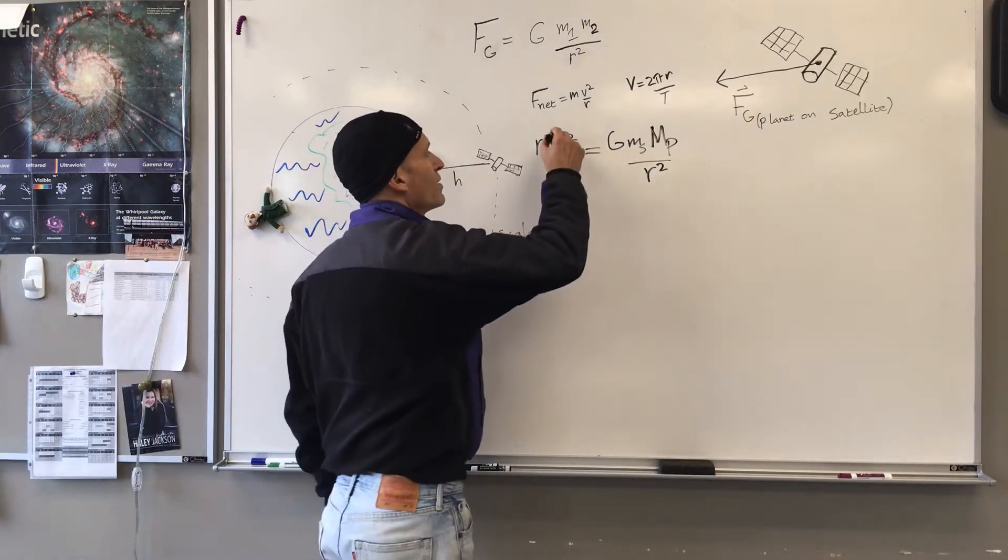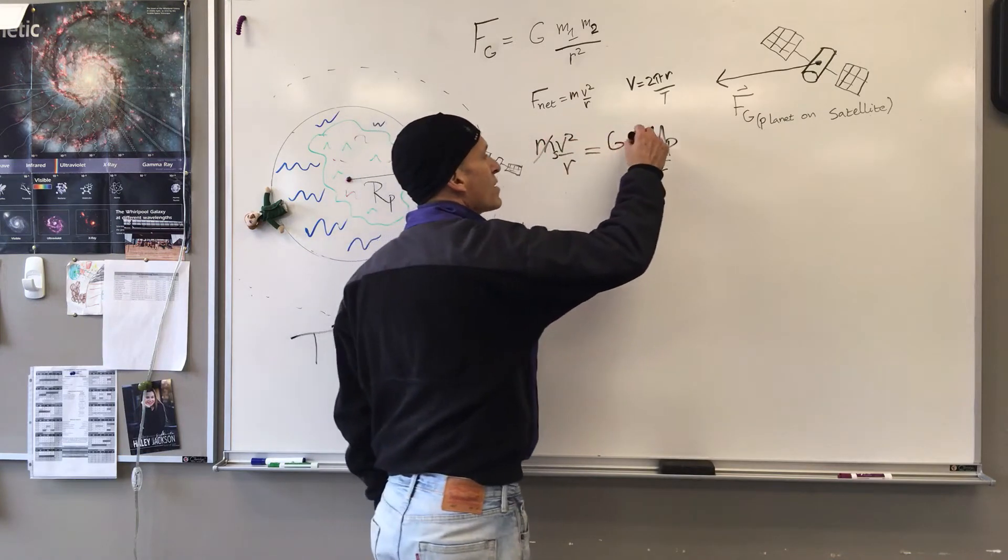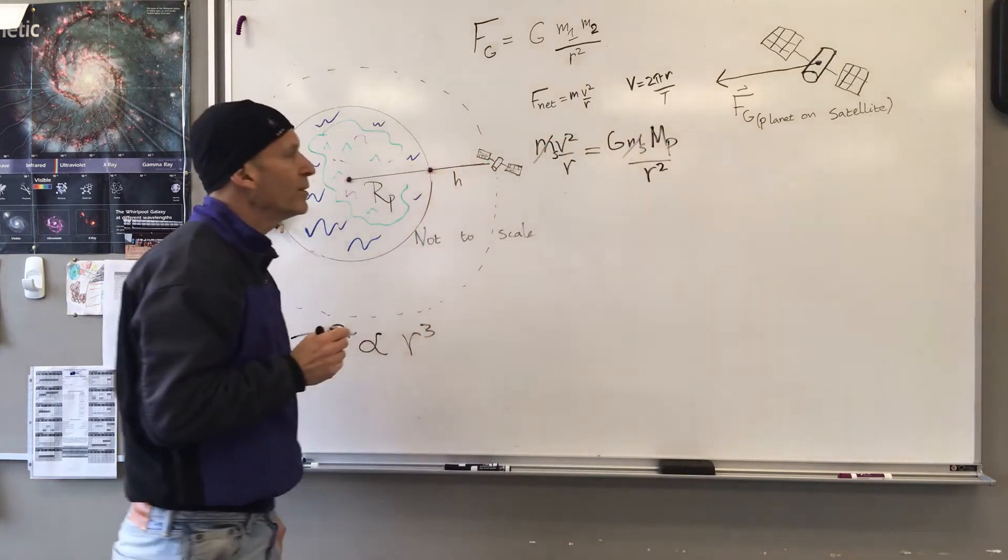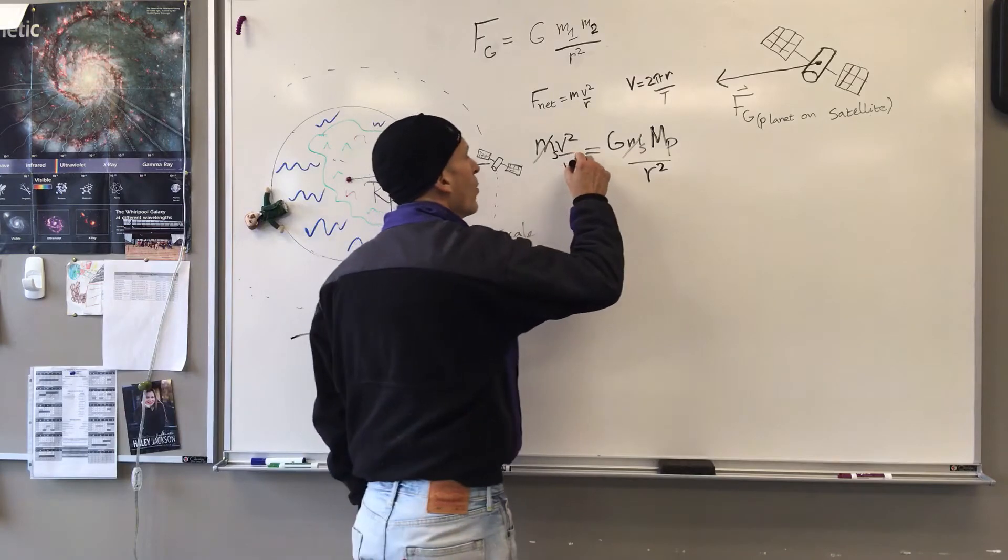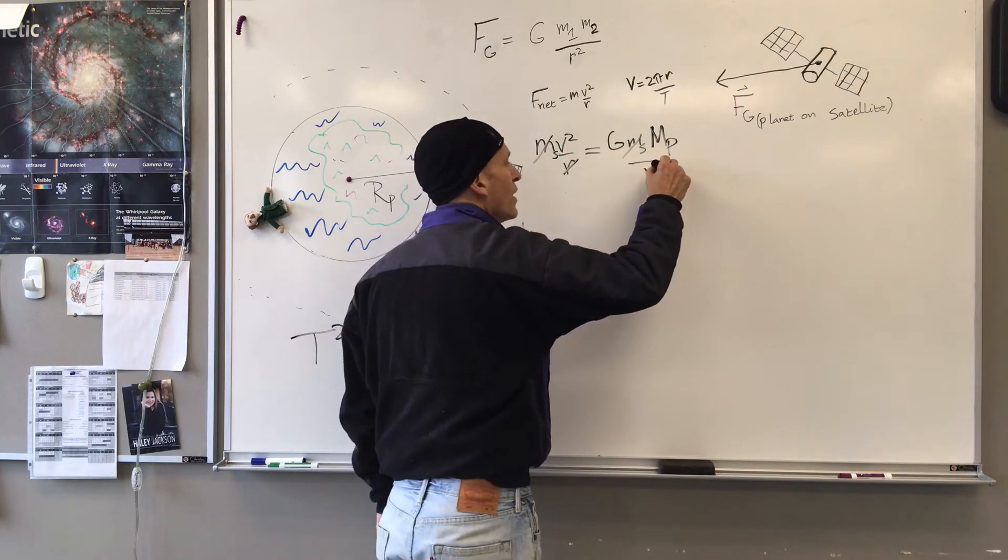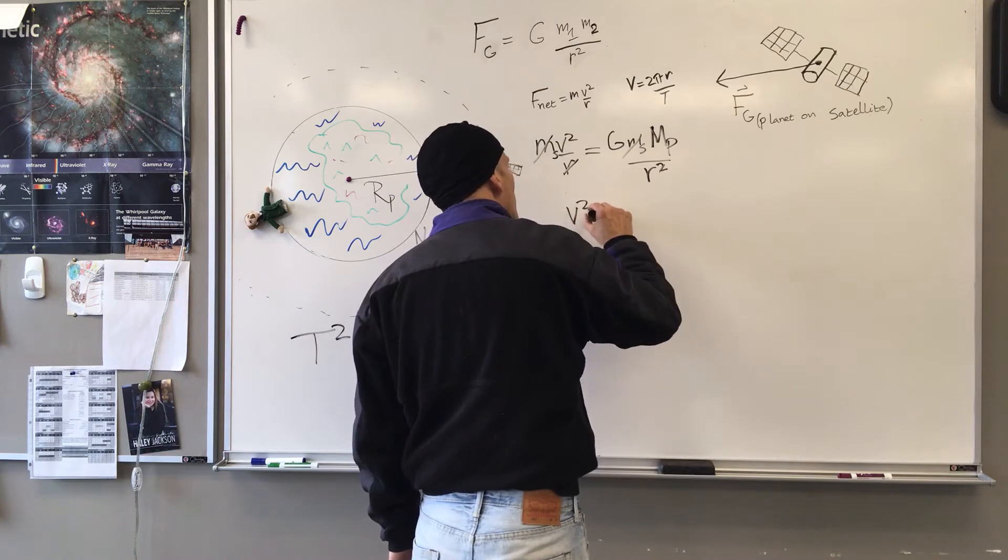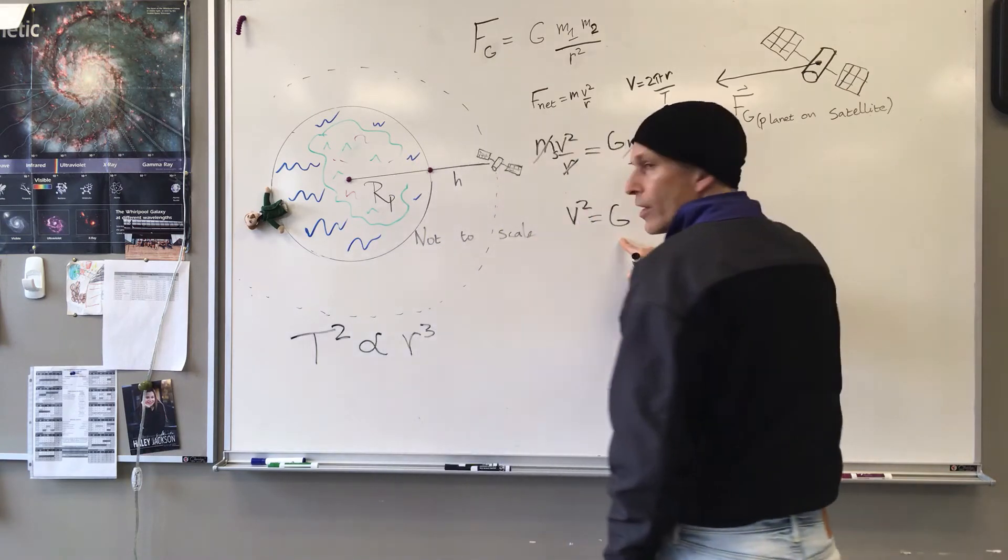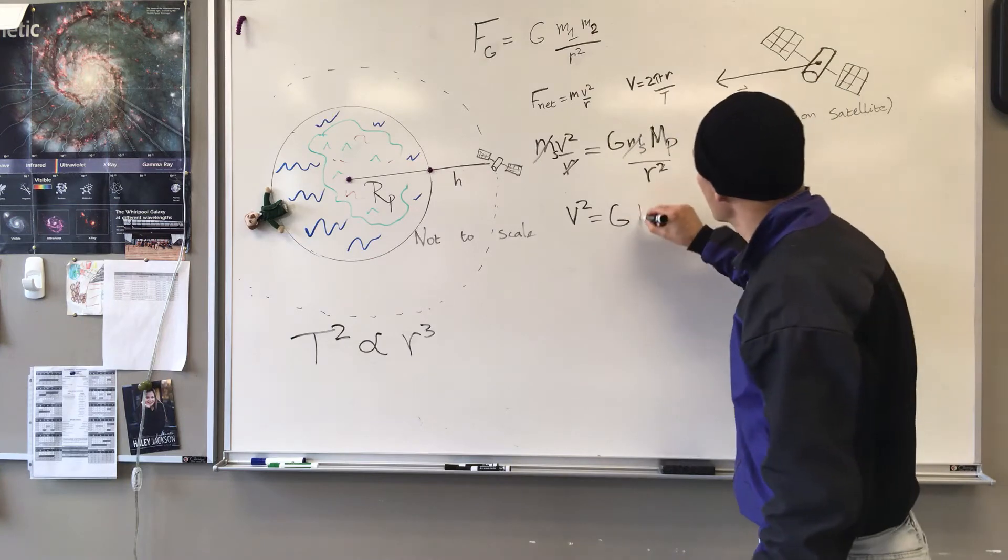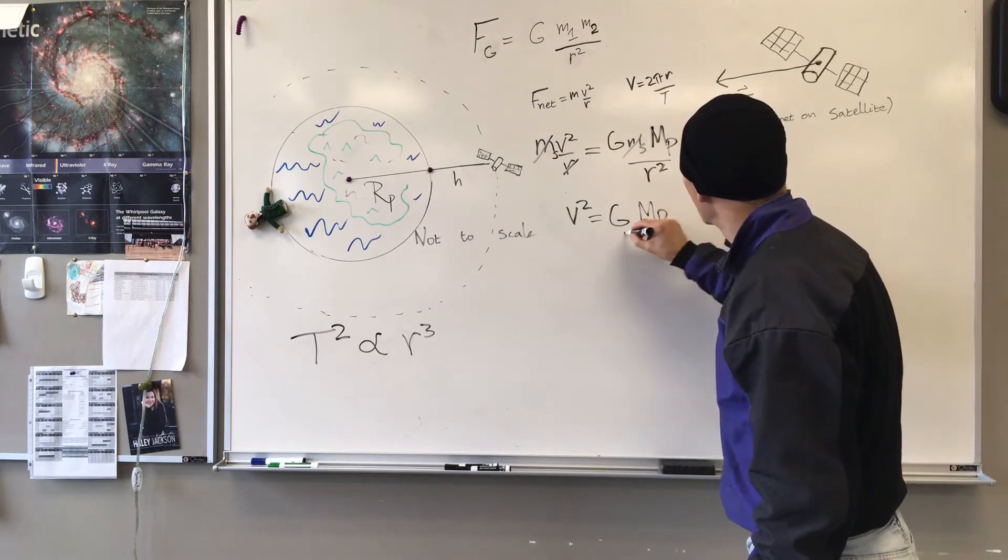We can start out by dividing things out. The mass of the satellite is gone. One R on the left is gone and one on the right. So now I have V squared equals G, gravitational constant, times the mass of the planet over R.